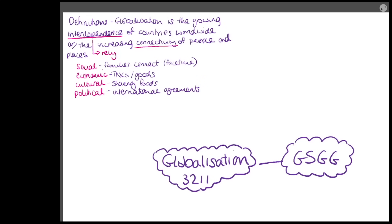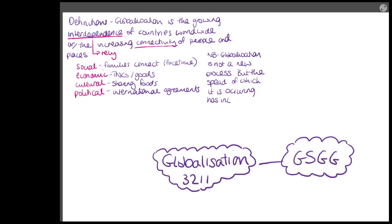Globalisation is not a new process - we've always been connected with places around the world for a long time. For example, we were connected east to west with the Silk Roads, an ancient network of trade routes through China and Asia. However, the speed at which globalisation is occurring has increased - we are becoming more instantly connected. This is also called time-space compression.